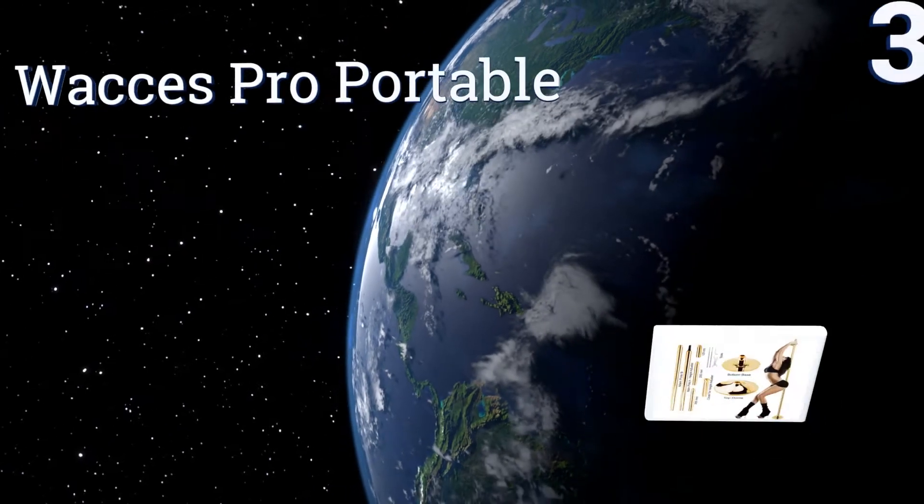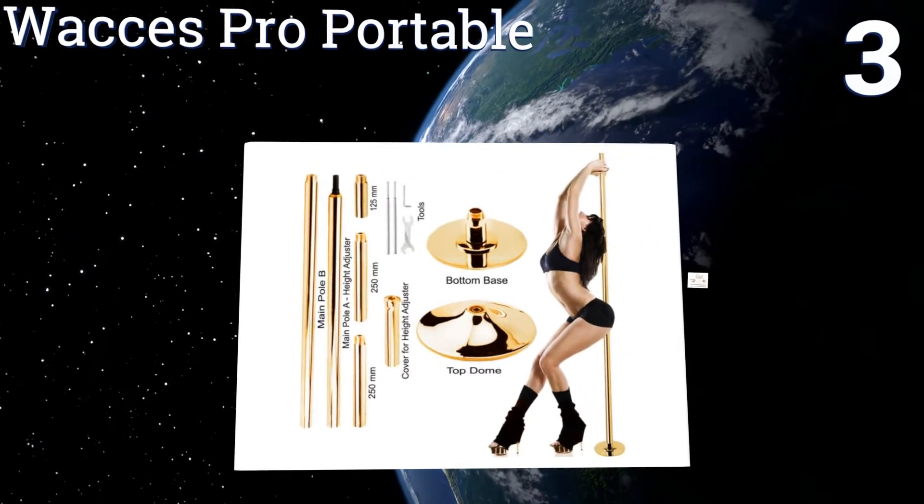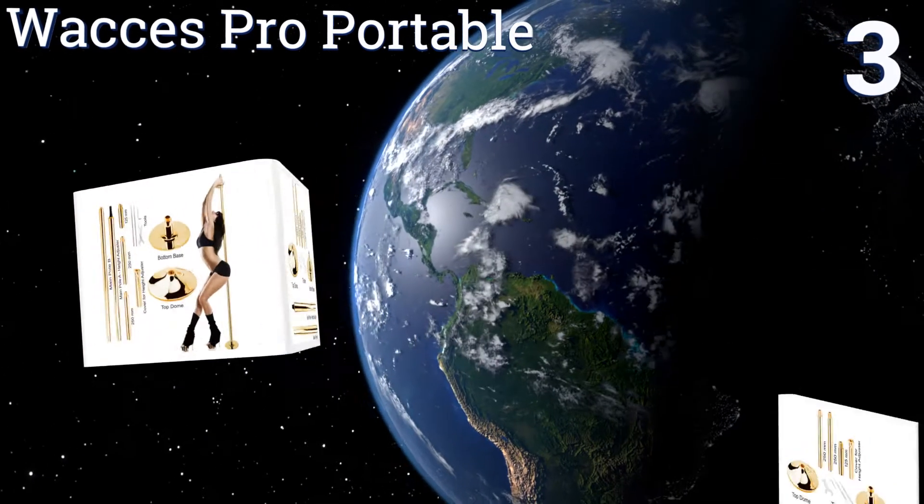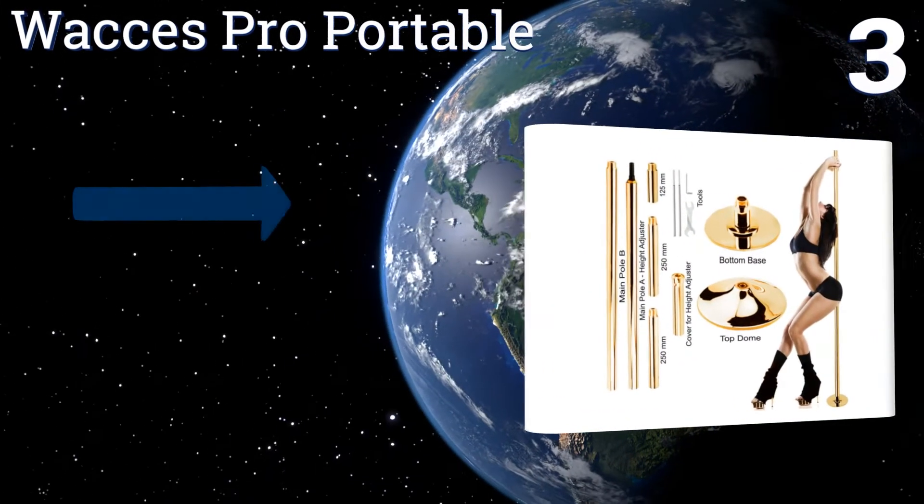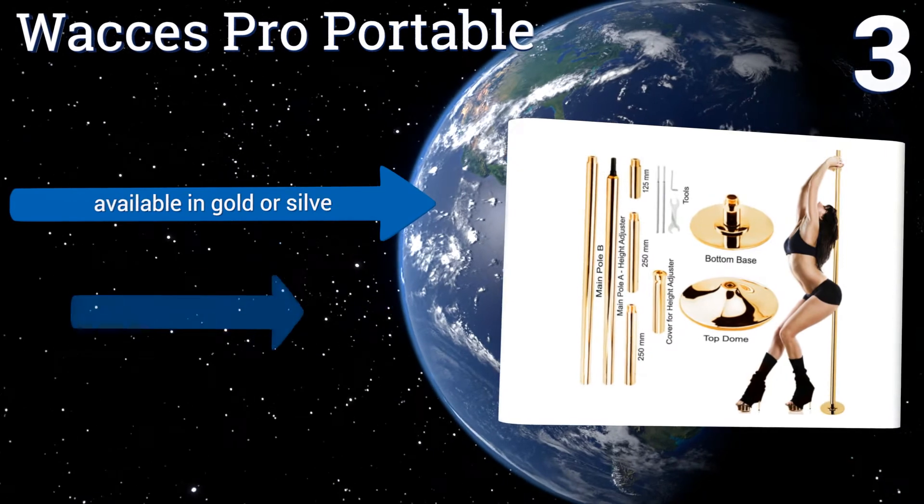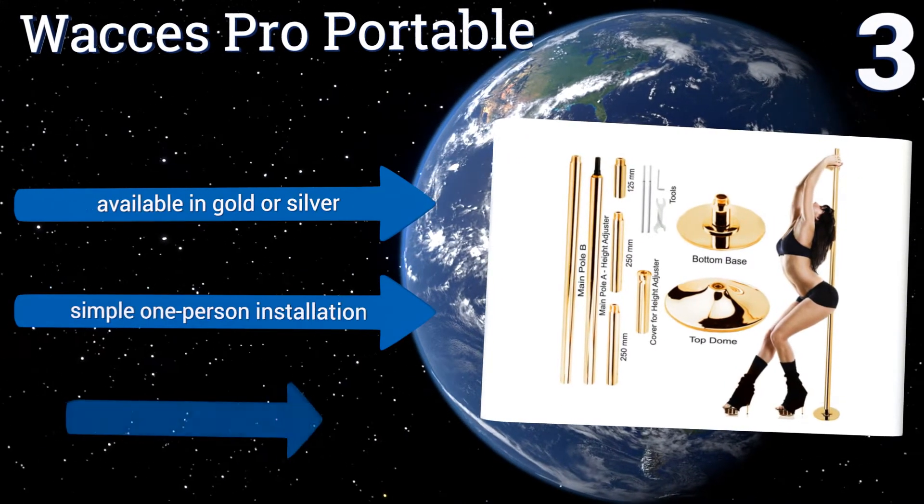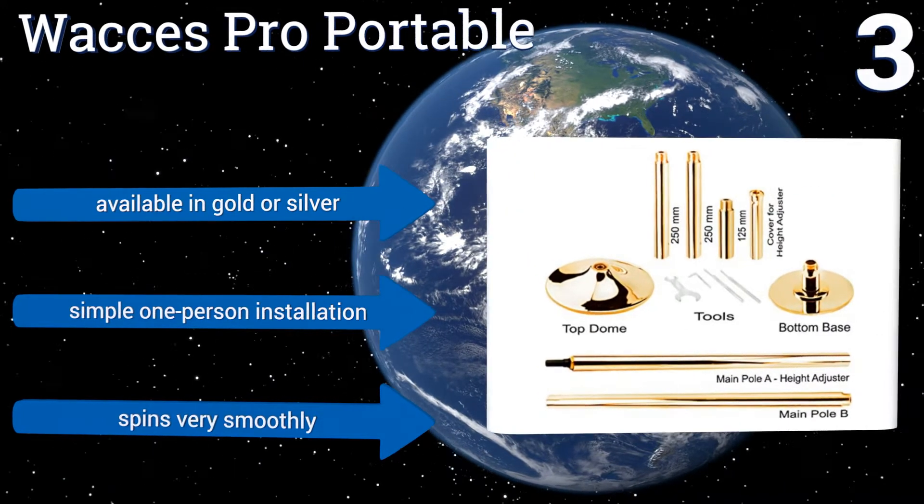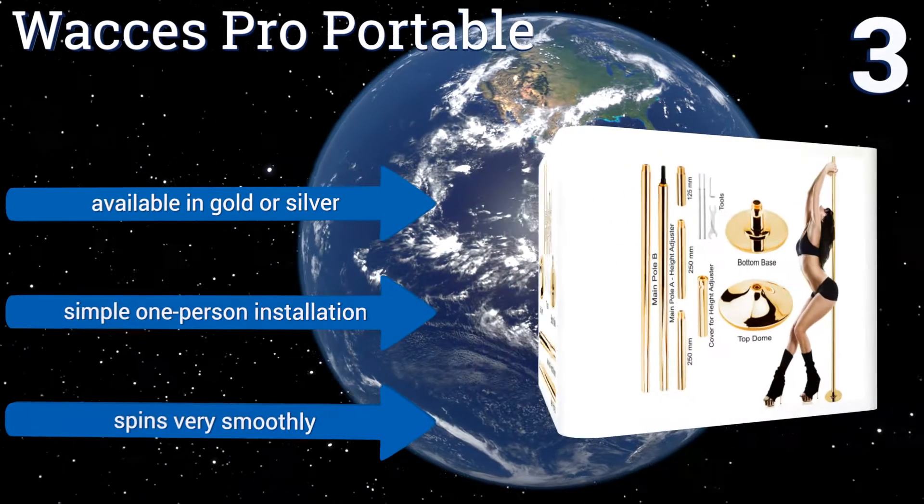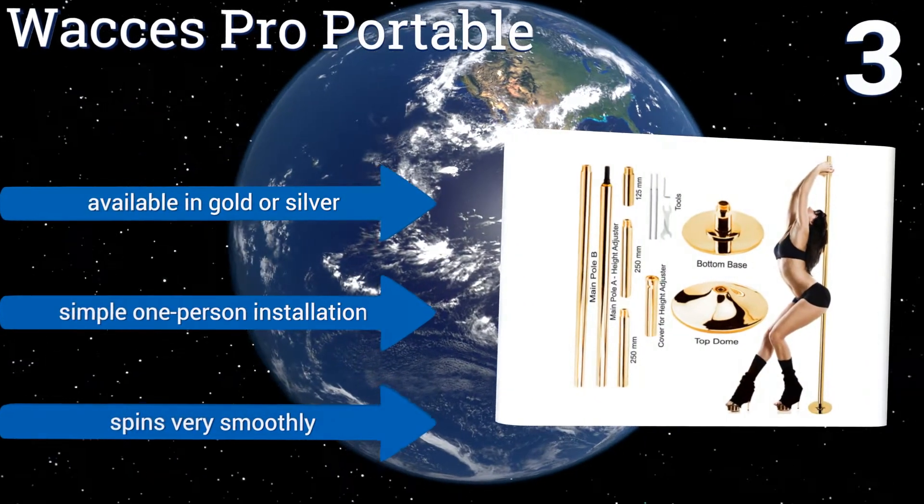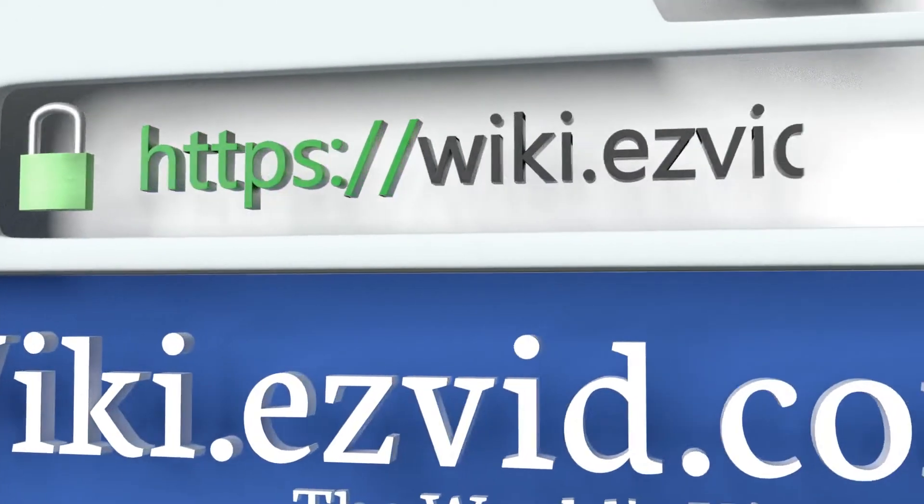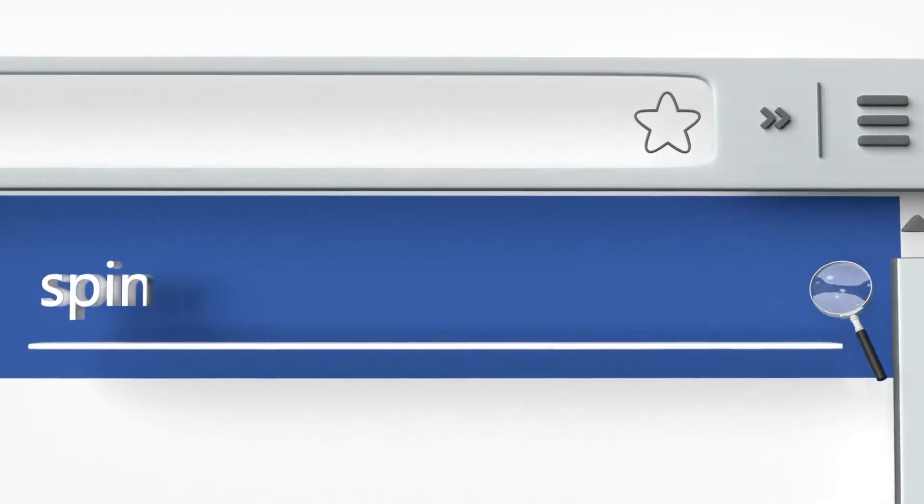Coming in at number three on our list, the Wax Pro Portable assembles and disassembles in minutes and works as both a static and a spinning pole. Great for people looking to increase their core and general body strength or perhaps hoping to entice a romantic partner. It's available in gold or silver and offers a simple one-person installation. It spins very smoothly. Our newest choices can only be seen at wiki.easyvid.com.